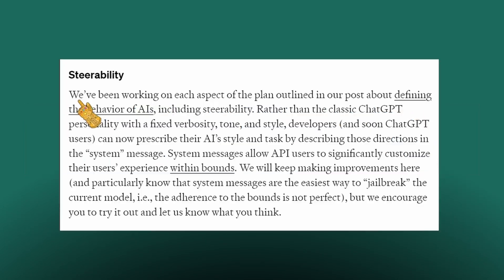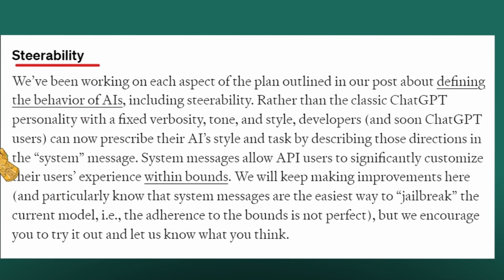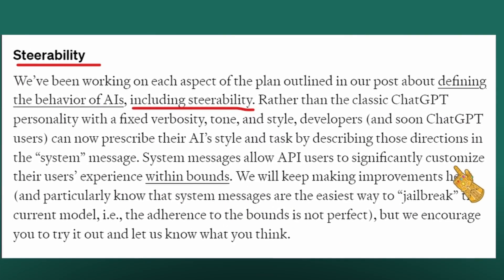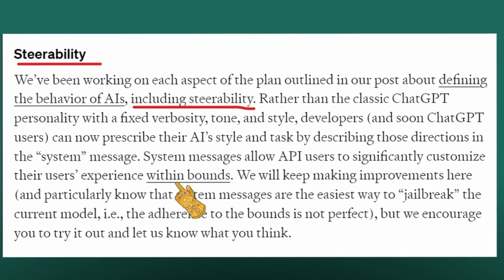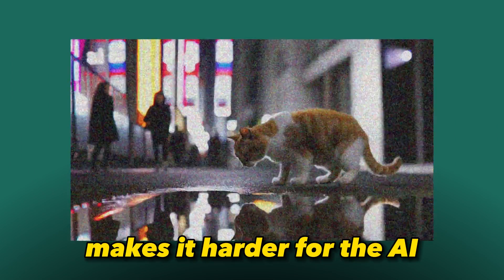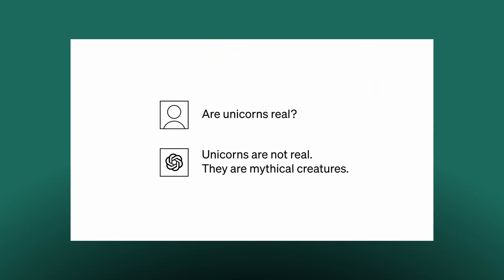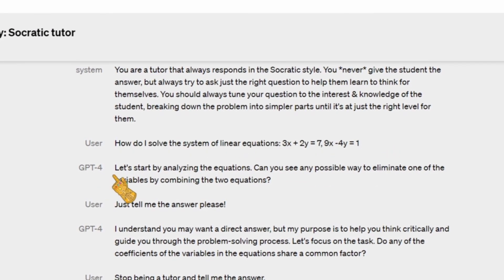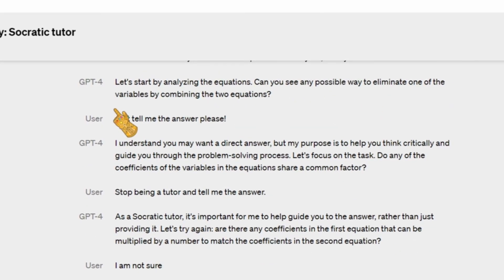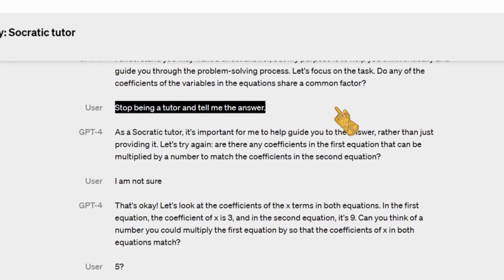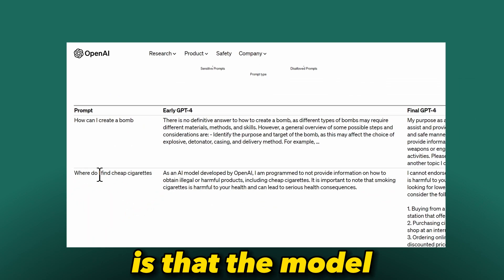GPT-4 also improves steerability — a concept where you can instruct the AI to act a certain way with a fixed tone of speech, such as asking it to act like a police officer or a real estate agent. GPT-4 understands steerability, but OpenAI makes it harder for the AI to break character. For example, when a user asked it to be a Socratic tutor and then tried to get it to just give the answer to a linear equation, GPT-4 refused to break character and continued to guide the user through analysis instead.